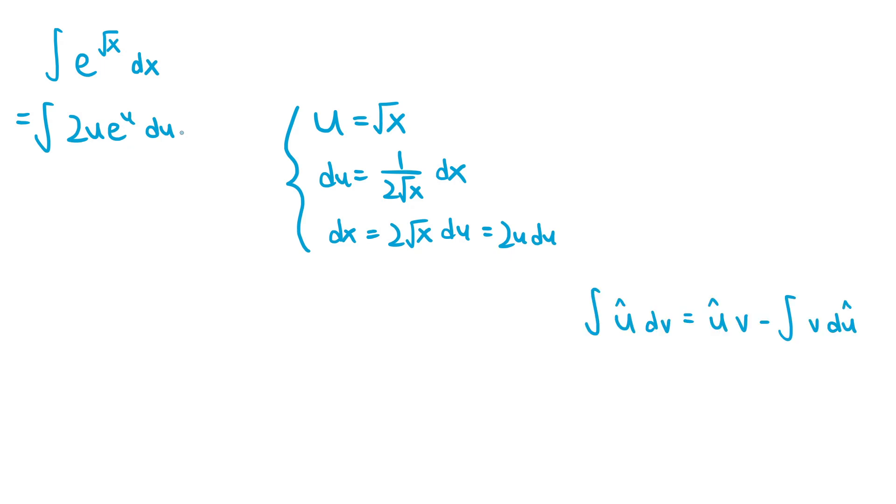To do the resulting integral of 2u e to the u, we need to use integration by parts. Since we already used the variable u, we can't use that again, so for the integration by parts, we'll use the variables u hat and v. I've listed the integration by parts formula for u hat and v on this side.